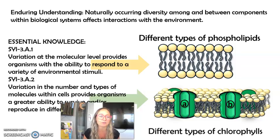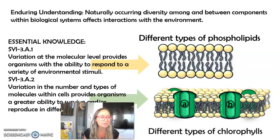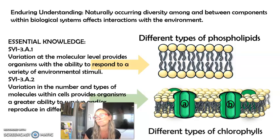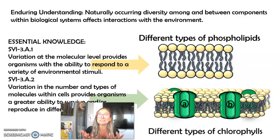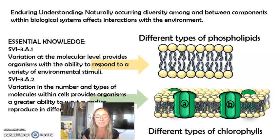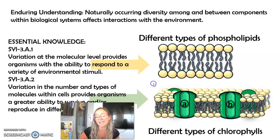We have chlorophyll A, we have chlorophyll B, as well as the antenna or accessory pigments that each have their own specialized frequency or wavelength of light that they absorb best. That is a variety within the cells that increases the plant's ability to do photosynthesis and carry out the light reaction to make the energy needed for the Calvin cycle and growth.